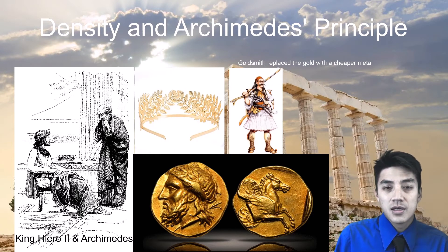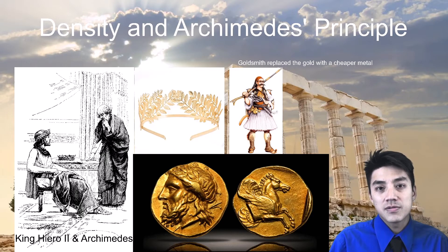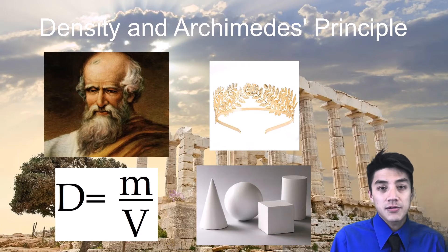The king suspected it was made of a cheaper metal that the goldsmith had replaced in the crown, and he had pocketed the gold for himself. Archimedes' plan was to find the density of the crown.